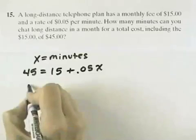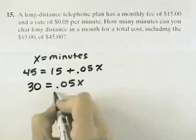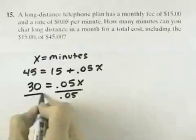Solving this, we'd subtract 15 from each side to get 30 equals .05X, and then dividing both sides by .05.